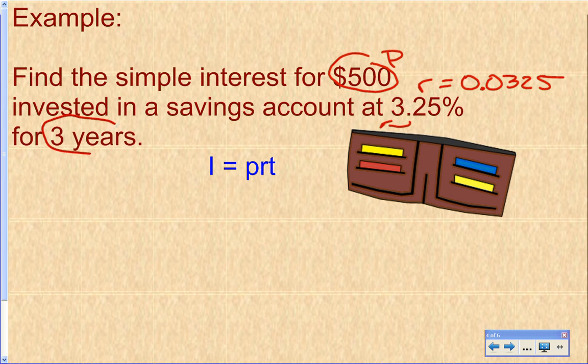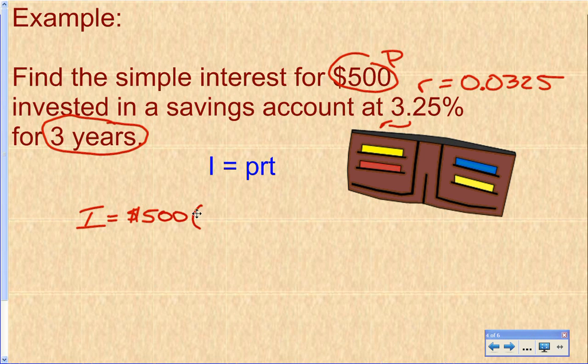Our time is in years already, so we're good to go. So now we just plug these three things in. Our interest equals the principal, which is $500, times the rate, which we changed it to a decimal up here, 0.0325 times the time, which is three years.